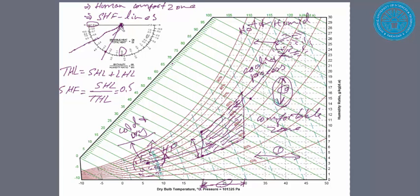So draw a line parallel to this line, anywhere on this chart. This line will be called the sensible heat vector line.